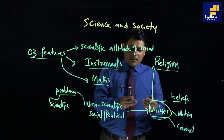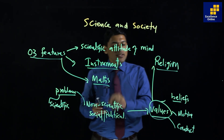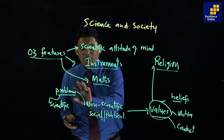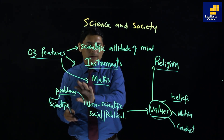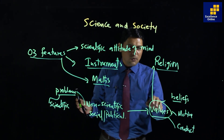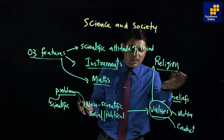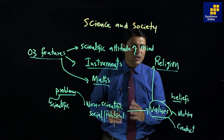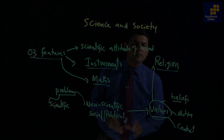If you want to get success, according to the writer, you must follow a triangle of three things: number one is the scientific approach, number two is values, and the last is behavior and religion. Hopefully that is clear. Thank you.